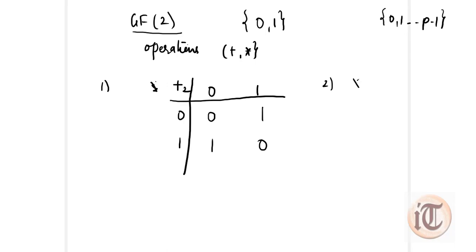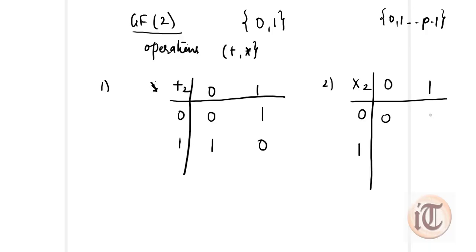The second matrix is multiplication modulo 2. For multiplication modulo 2: 0×0=0, 0×1=0, 1×0=0, and 1×1=1. If the resulting value is equal to or greater than 2, we again take the mod value.